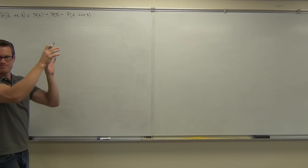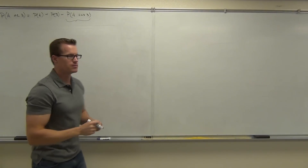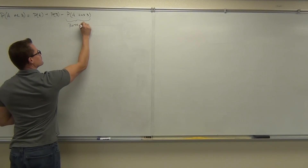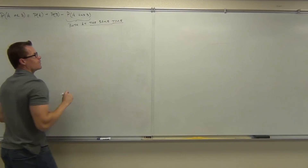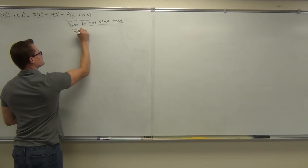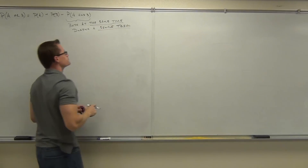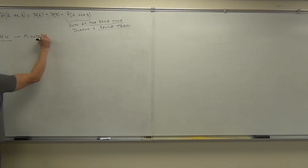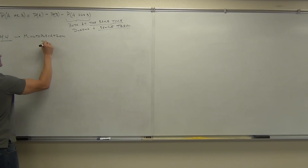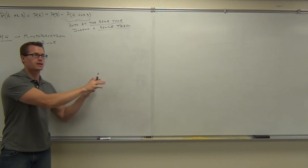I'm making a clear point because I'm going to do something that looks similar to this, and you have to know the difference. In the addition rule context, 'and' means both at the same time during a single trial. Now we're going to get into section 4.4 and talk about the multiplication rule, which uses another 'and' — and I need you to know the difference between these two uses of that word.